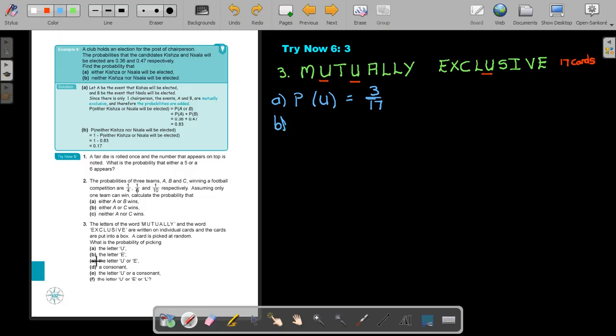Okay, number B. The letter E. So the probability, it's again a single event. The letter E. So let's just find that letter E's. Let's just see. It's just that one and that one. So that will only be 2 out of 17.